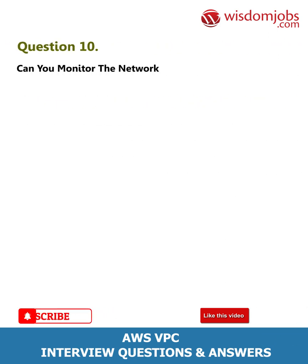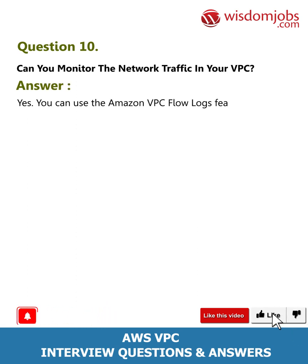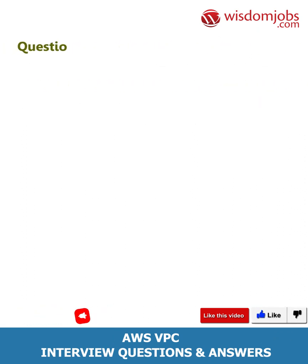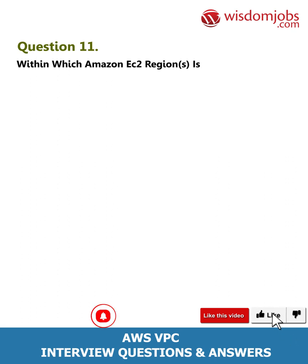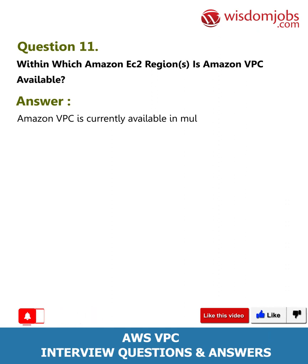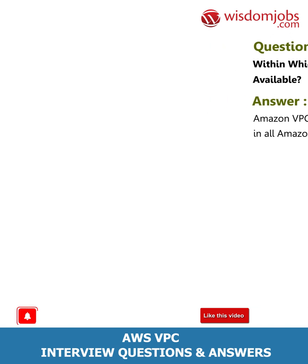Question 10: Can you monitor the network traffic in your VPC? Answer: Yes, you can use the Amazon VPC flow logs feature to monitor the network traffic in your VPC. Question 11: Within which Amazon EC2 regions is Amazon VPC available? Answer: Amazon VPC is currently available in multiple availability zones in all Amazon EC2 regions.